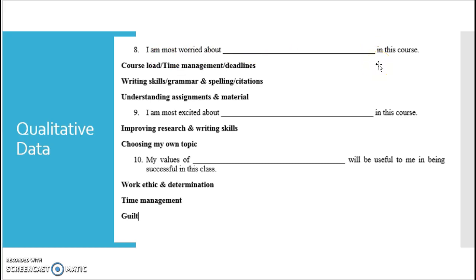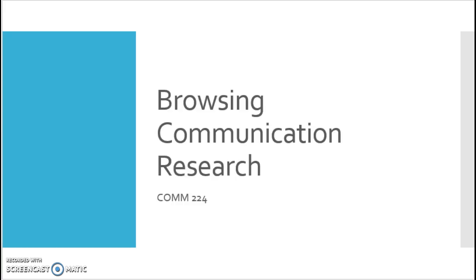These kinds of questions — from strongly agree to strongly disagree — are Likert-style questions, and we'll talk about those when we discuss quantitative data. We'll also talk about the differences between quantitative and qualitative research, and about how different kinds of research methods, in this case a survey, can be useful for finding out different types of information — in this case, how people think or feel.